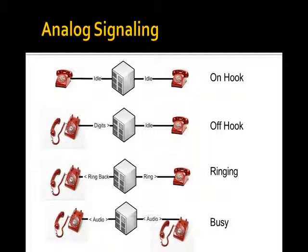So in that case, both of those lines are then in a state we call busy — they're in a call, actively exchanging audio; I'm not actively sending or expecting signaling from them. When we're ready to end the call, one of us hangs up. If I hang up, what happens at the switch end? It opens the loop. So the switch sees I stopped drawing current — 'you must have hung up the phone' — and the switch is going to tear down everything else.